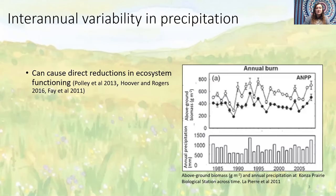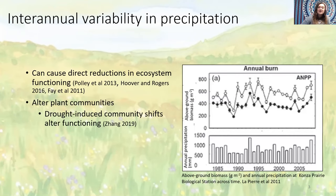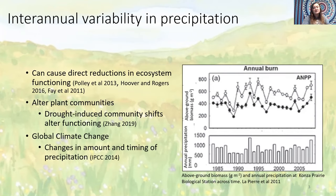Climate can affect prairies in numerous ways. Precipitation can directly affect ecosystem functioning, such as above-ground biomass. The timing of precipitation within a year, as well as between years, can alter ecosystem functioning as well as plant community composition. Drought can cause a reordering of species abundance, and severe or chronic drought can even cause some species to die out of the community. Understanding the effects of climate on tallgrass prairie is particularly important in light of climate change, as an increase in the variability of both the amount and timing of precipitation is predicted to occur this century.